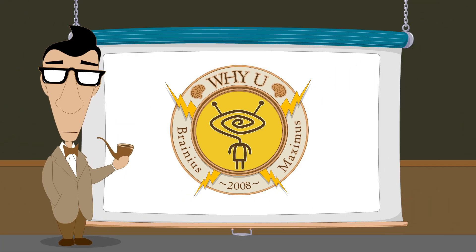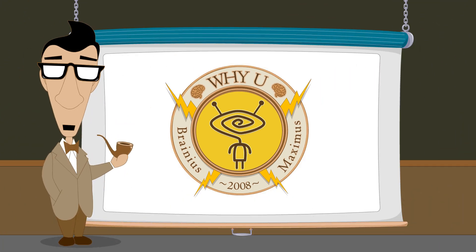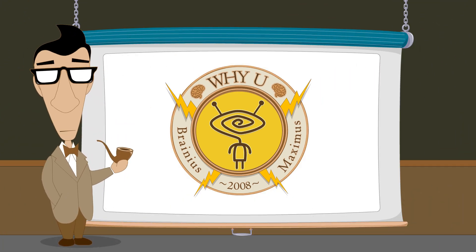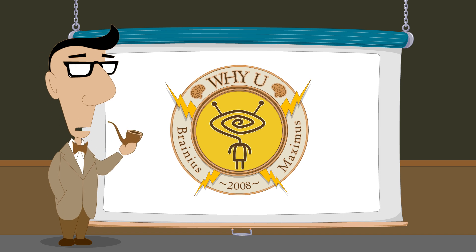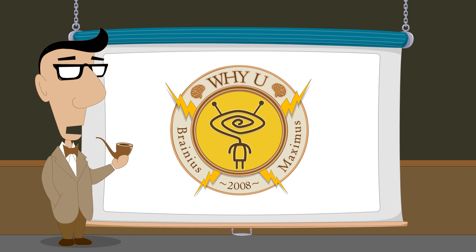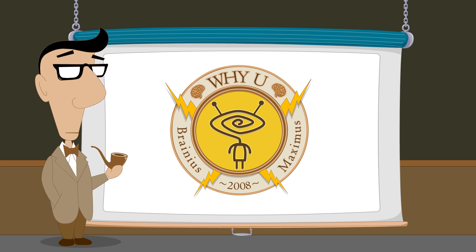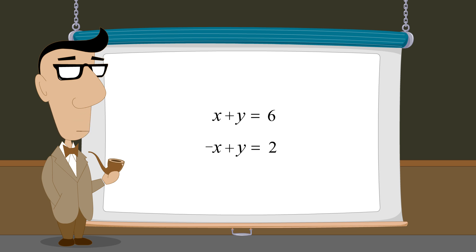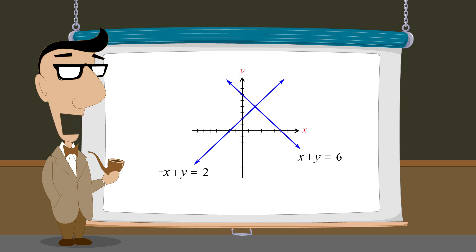Hello, I'm Professor Von Schmohawk and welcome to Why U. We have seen in the last several lectures that systems of two linear equations in two variables can be visually represented by simultaneously graphing both equations.